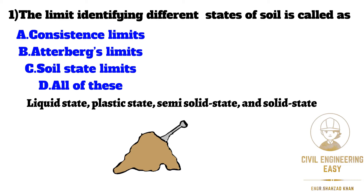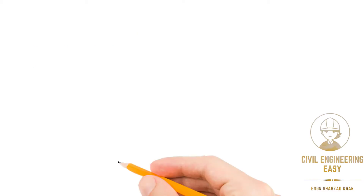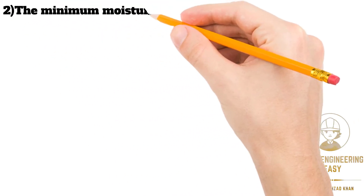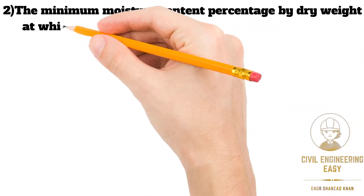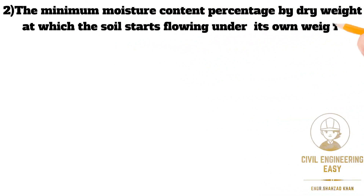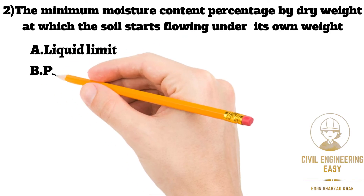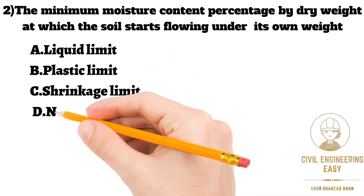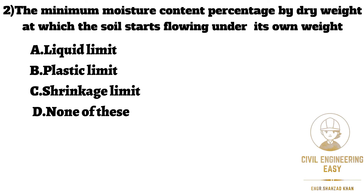These limits are also called Atterberg's limits or soil state limits. The suitable answer is all of these. In MCQ number two, it is given that the minimum moisture content percentage by dry weight at which the soil starts flowing under its own weight: option A is liquid limit, option B is plastic limit, option C is shrinkage limit, and option D is none of these.